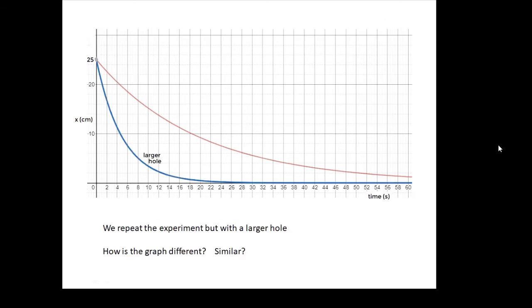We repeat the experiment, but with a larger hole, and we get this graph. How are the graphs different? How are the graphs similar?